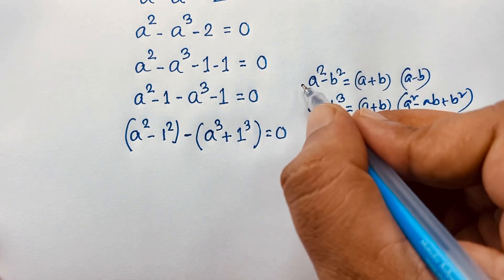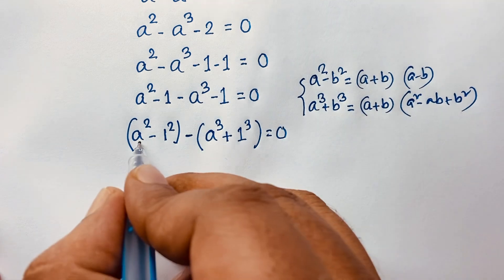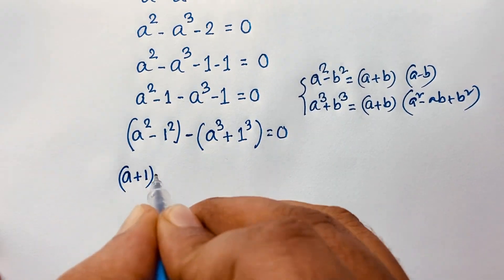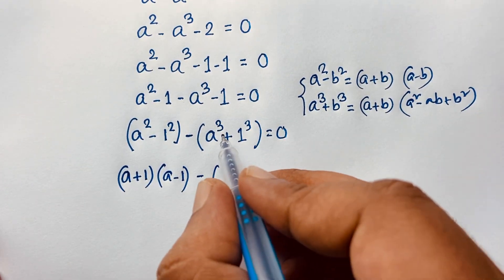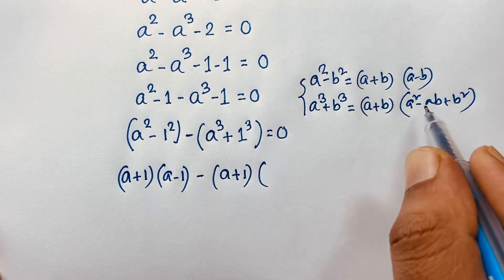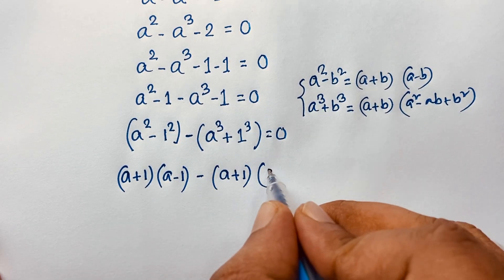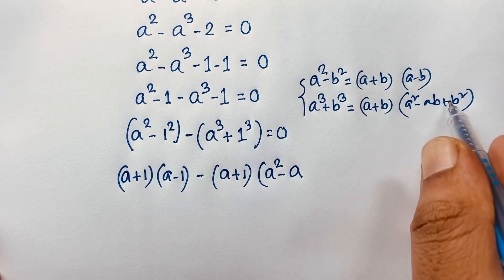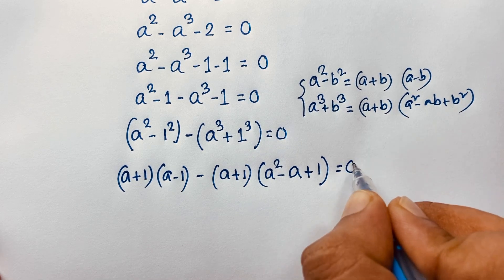Applying both formulas, where a is a and b is 1: a squared minus b squared becomes (a + 1)(a − 1), minus (a + 1)(a squared minus a·1 plus 1 squared). So we get (a + 1)(a − 1) minus (a + 1)(a squared minus a + 1) is equal to 0.